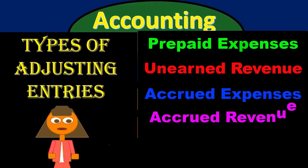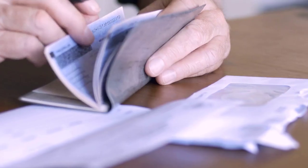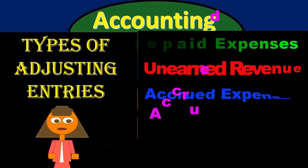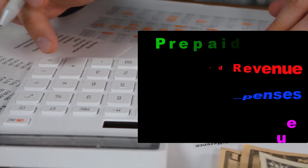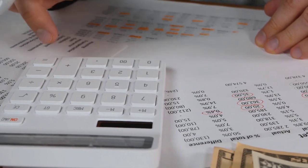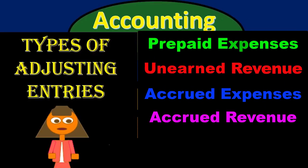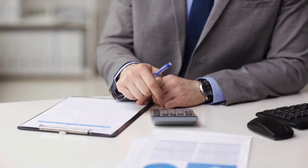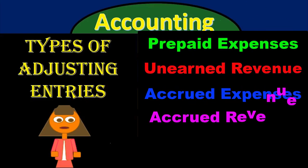All the normal entries have been done, the bills have been paid, the invoices have been entered for the month, we have reconciled the bank accounts. Now we are considering the adjusting process — those adjusting journal entries needed to make the adjusted trial balance so that we can create the financial statements, being used to be as close to an accrual basis as possible.